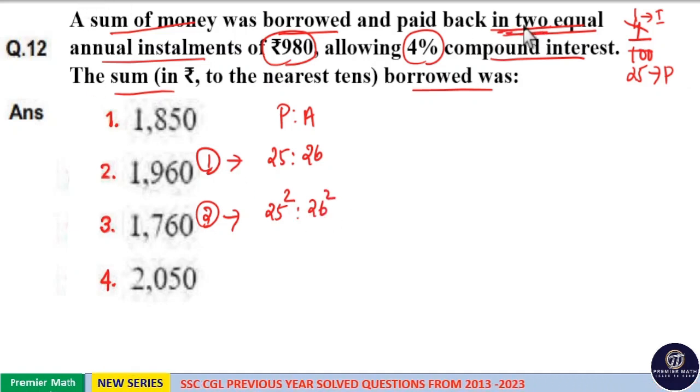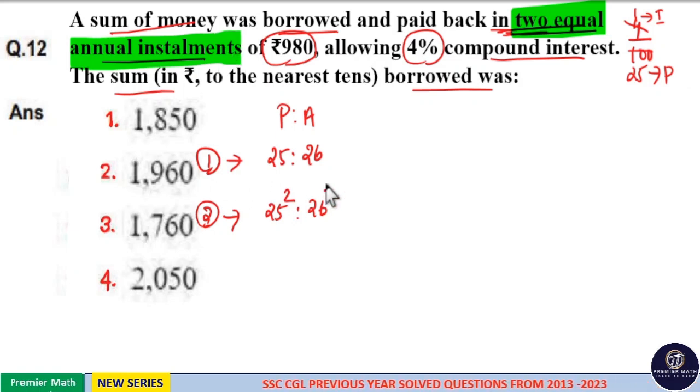Now question clearly says amount paid back in two equal annual installments which means this 26 part and 26 square part are equal. But here it is not equal so we should equalize it. That is in first year it is 26 part. In second year it is 26 square part. But question says this amount in first year and second year are equal.